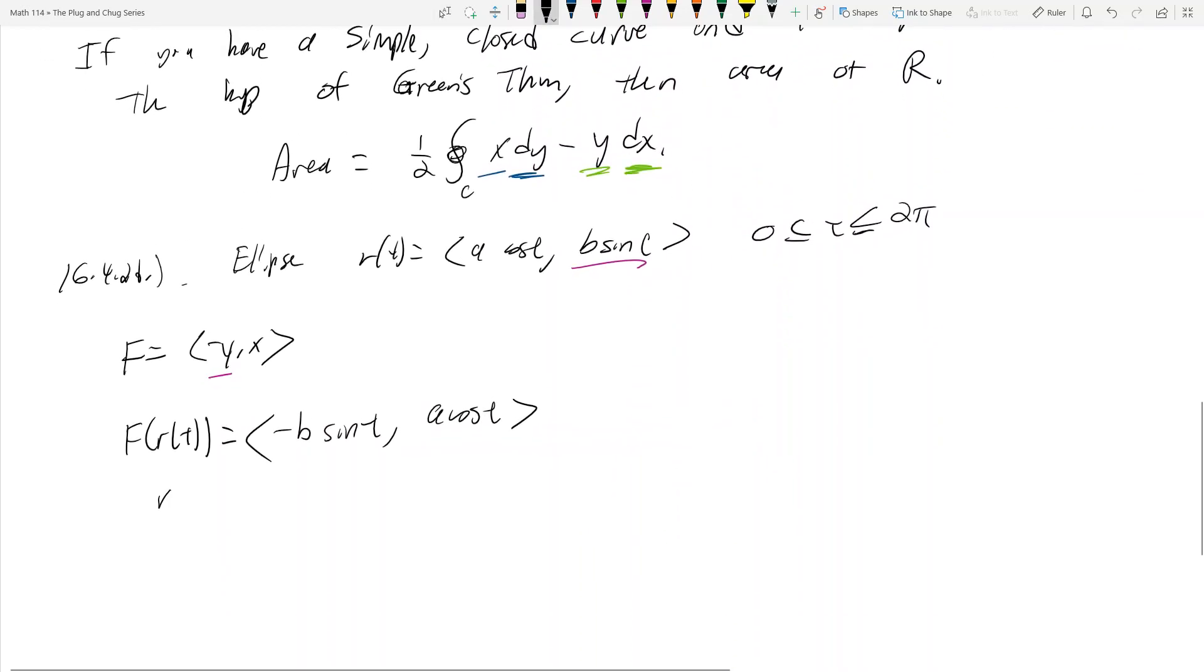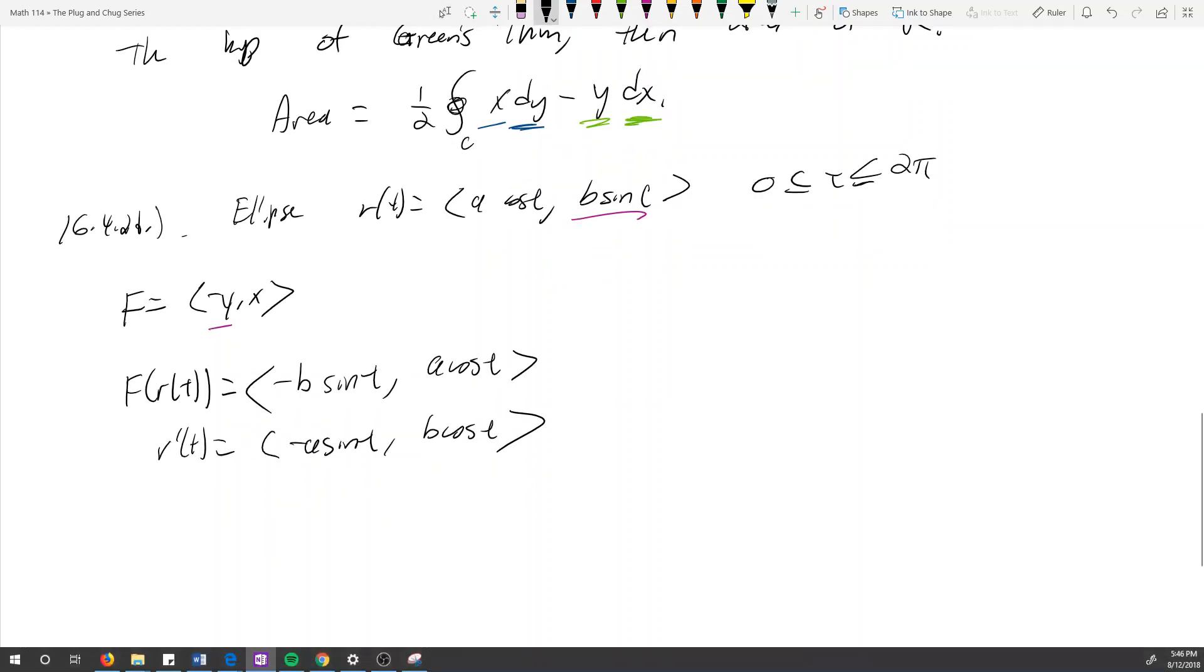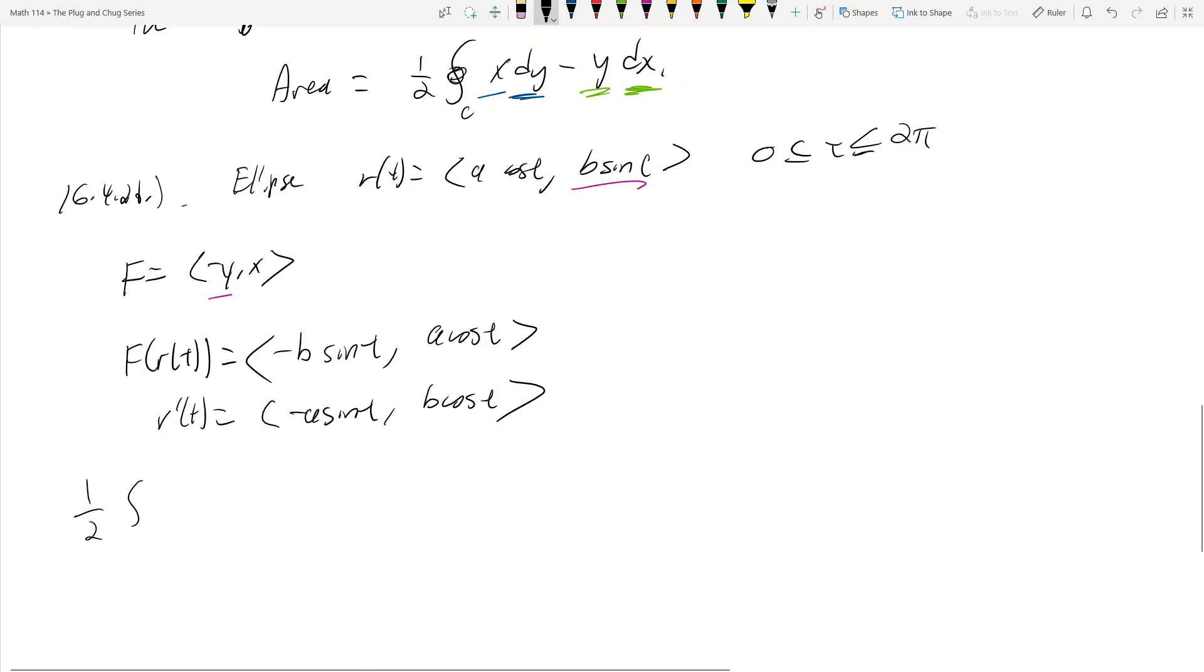And then r'(t) is equal to (-a sin t, b cos t). Now we find that 1/2 the integral of x dy - y dx is going to be equal to 1/2 the line integral of F(r(t)) dotted with r'(t). This is exactly like the second example I did in 16.2. We had a dx and dy and we converted it into this, and now we got dt.